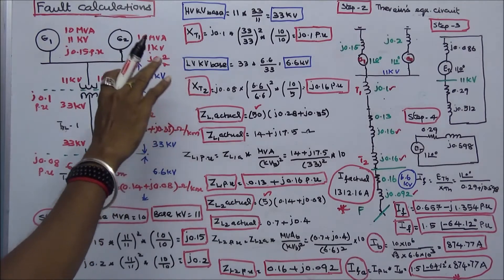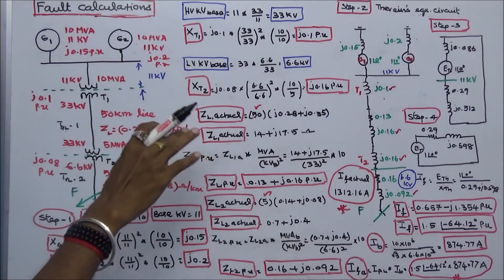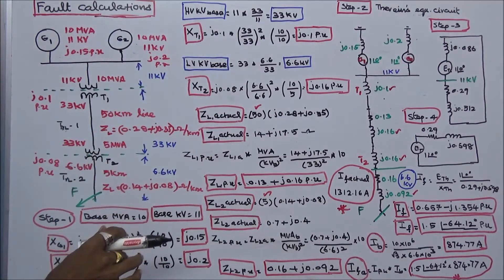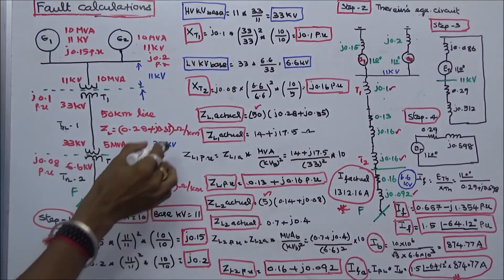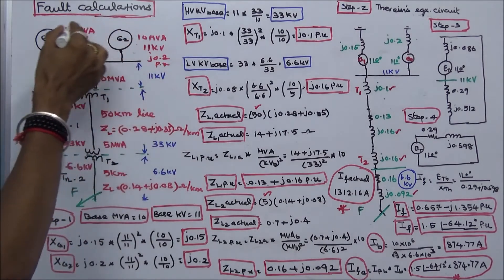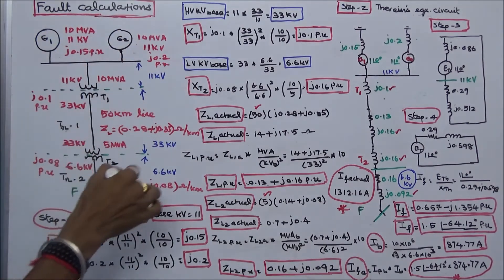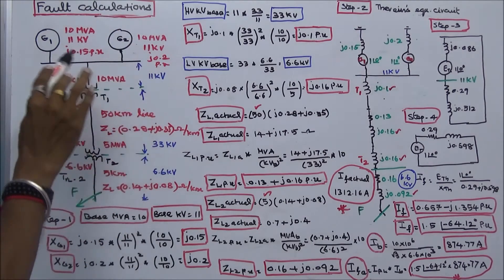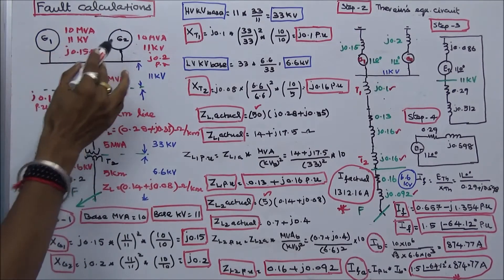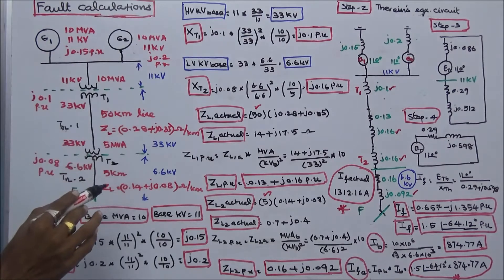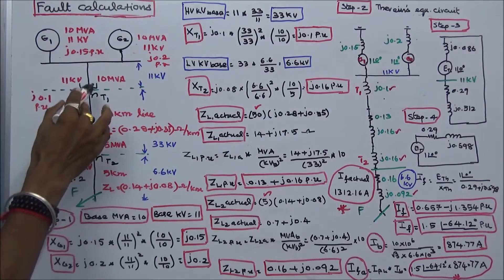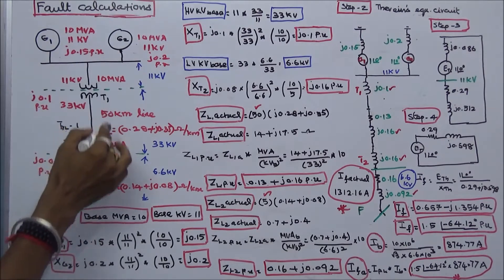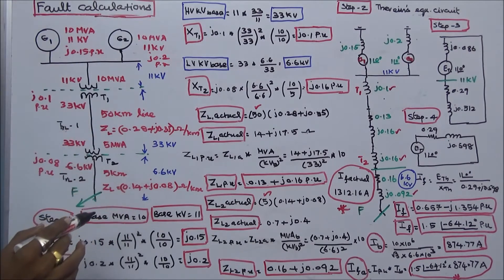In this class, we work out a problem on symmetrical fault calculation. This is the given radial power system network, which consists of two generators, two transformers, and two transmission lines.